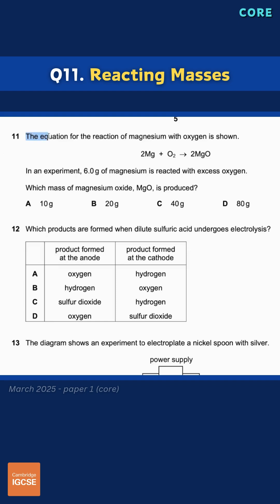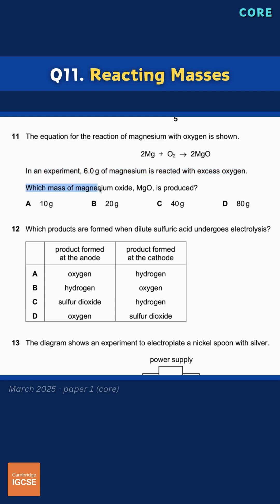Question number 11. The equation for the reaction of magnesium with oxygen is shown: 2Mg + O₂ forms 2MgO. In an experiment, 6 grams of magnesium is reacted with excess oxygen. Which mass of magnesium oxide, MgO, is produced?